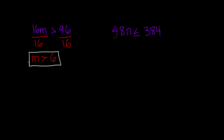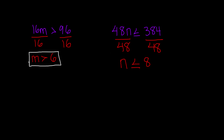Now let's solve this last example, which is 48n is less than or equal to 384. Since 48 is being multiplied by n, we have to divide by 48 on both sides. 48 and 48 cancel each other out, and we are left with n is less than or equal to 384 divided by 48, which is equal to 8. So the value of n is either equal to 8 or any number that is less than 8.